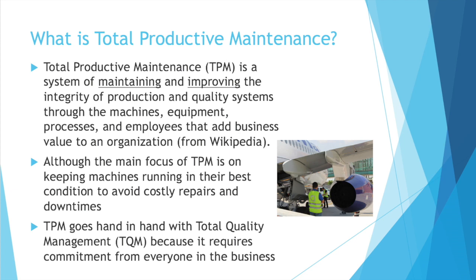TPM goes hand-in-hand with Total Quality Management, TQM, because it requires commitment from everyone in the business. Whereas TQM is a more broad overview of a quality system and the way a company should run, TPM is very similar in that it empowers employees and has a very direct focus with certain aspects. TQM is more of a system approach; TPM is a lot more focused on the equipment.